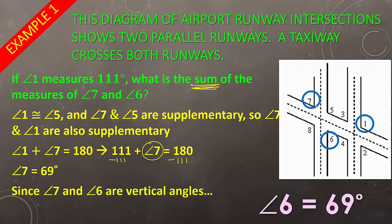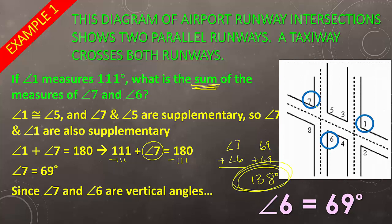Since angles 7 and 6 are vertical angles, angle 6 also equals 69 degrees. Now, the problem asks for the sum of the measures of the two angles, so we take angle 7 plus angle 6, which is 69 plus 69, and that gives you 138 degrees. So 138 degrees is your answer. Make sure you read the problem correctly — it's asking for the sum of those two angles.